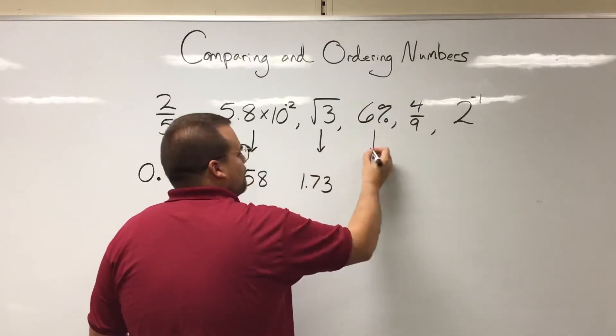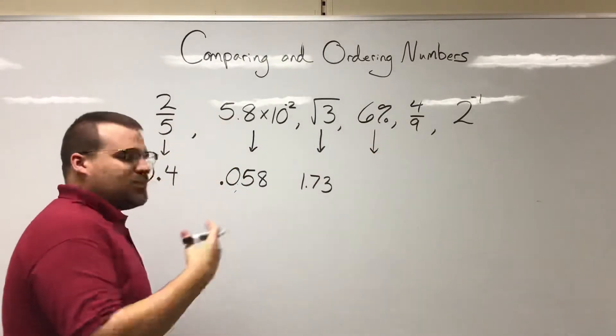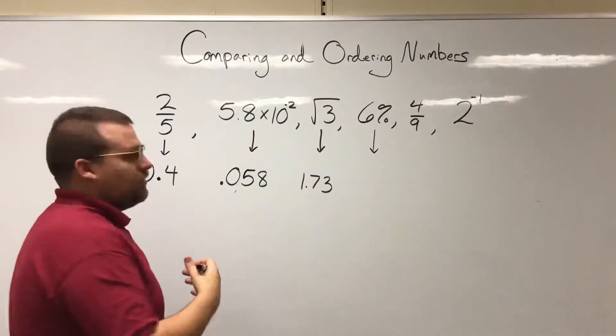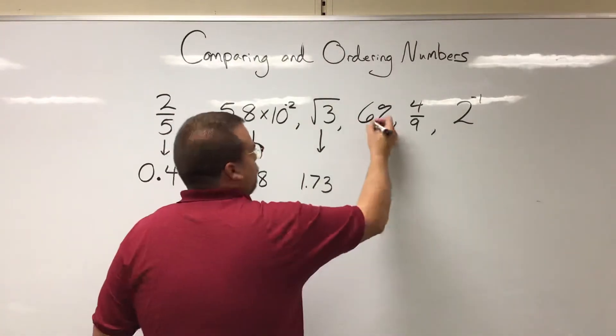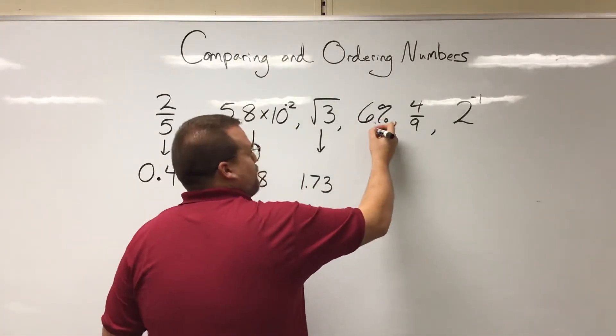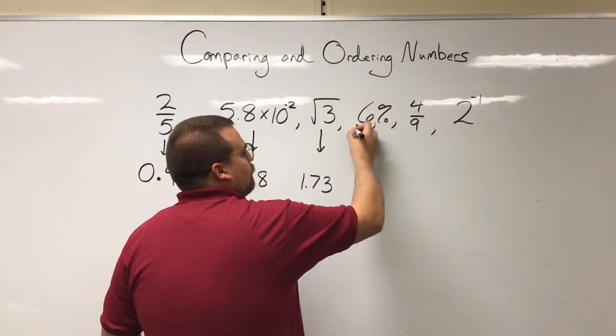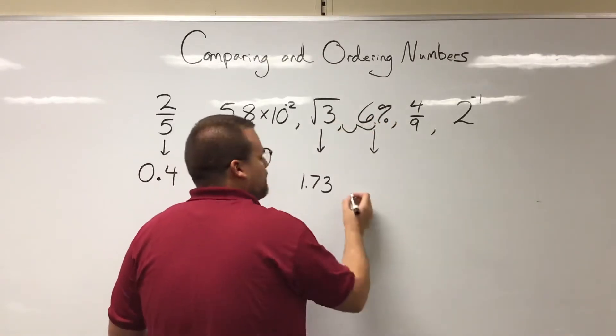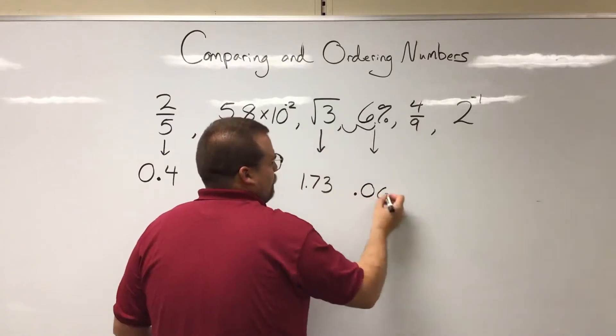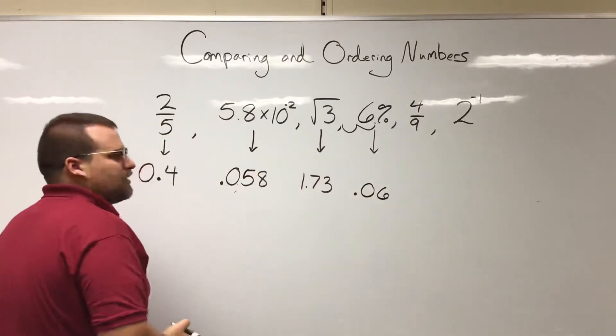We have a percentage. As we know with percentages, to convert those to decimals, you just take where that decimal currently is right here after the number and move it over two spots. So 0.06. There is our decimal for six percent.